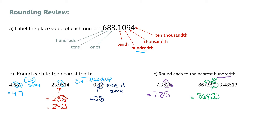The last one is 3.485. I'm rounding to the second decimal spot. The five will tell me whether to round the eight up to a nine or leave it. What does the five tell me? It tells me to round it up. So that's 3.49.